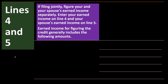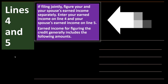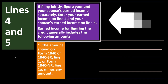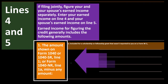Lines 4 and 5: if filing jointly, figure you and your spouse's earned income separately. Enter your earned income on line 4 and your spouse's on line 5. Earned income for figuring the credit generally includes the amounts shown on Form 1040 or 1040-SR line 1, or Form 1040-NR line 1A, minus certain amounts.